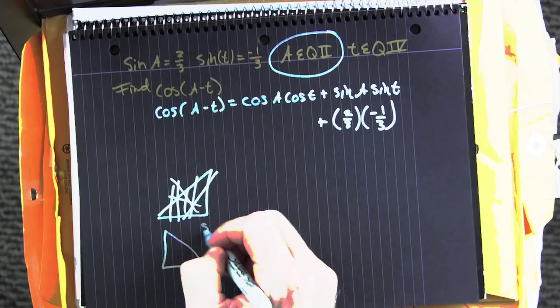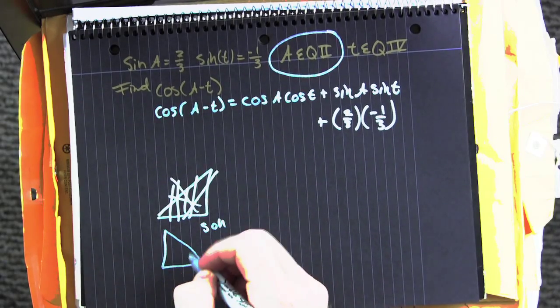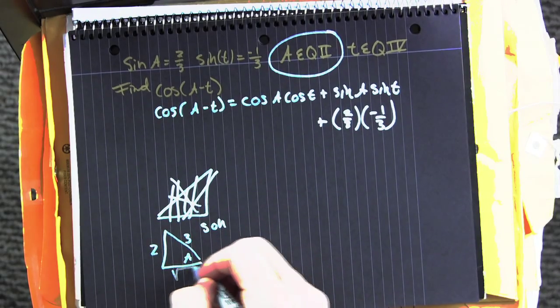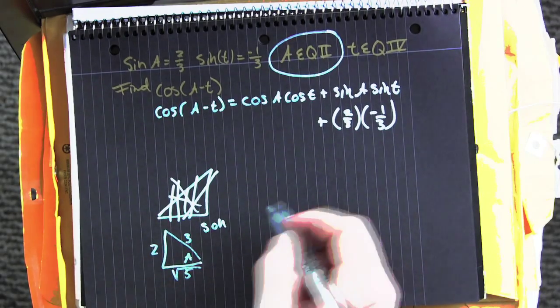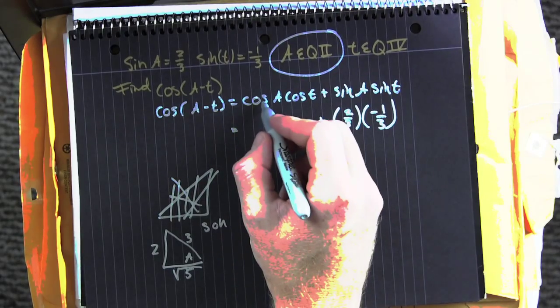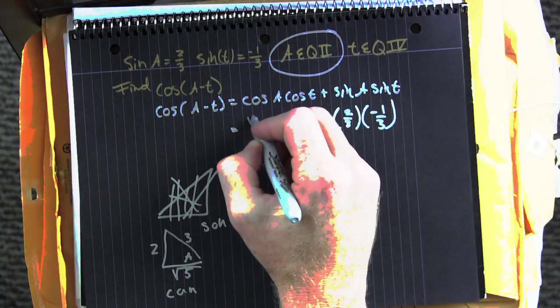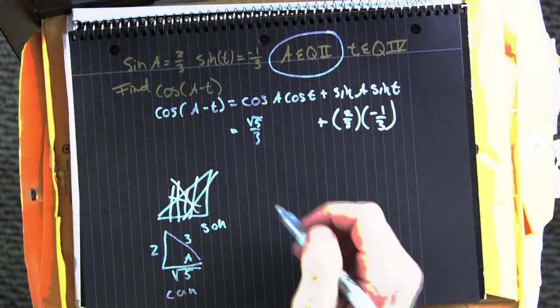Now that's triangle A, and we're looking at the sine, so opposite over hypotenuse. Now find the other one using the Pythagorean. Good. Now we're going to read off that triangle for the cosine of A. The cosine is adjacent, which is root 5, over 2.